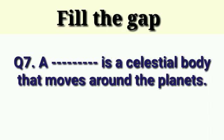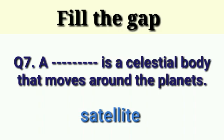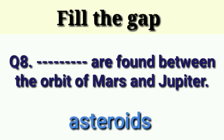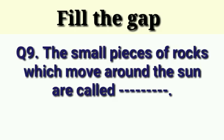Next question: a dash is a celestial body that moves around the planets. Answer is: satellite. Next question: dash are found between the orbit of Mars and Jupiter. Answer is: asteroids. Next question: the small pieces of rocks which move around the sun are called dash.